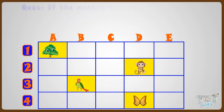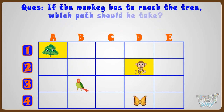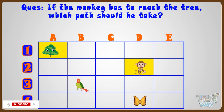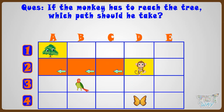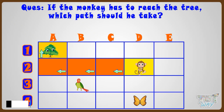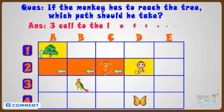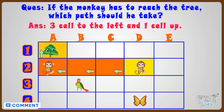If the monkey has to reach the tree, which path should he take? He should move 3 cells to the right, and then 1 cell up to reach the tree.